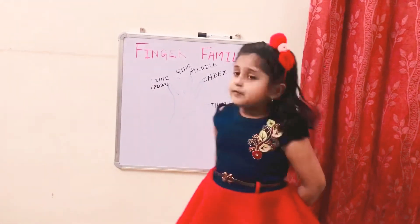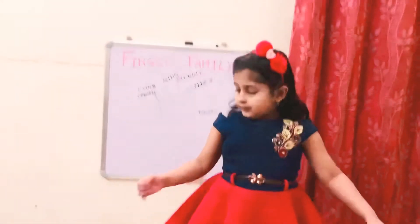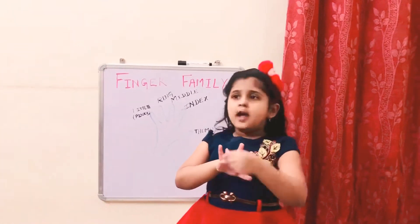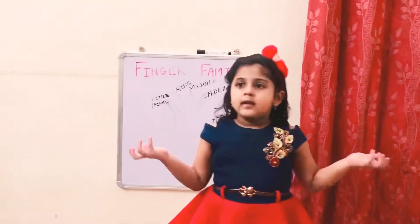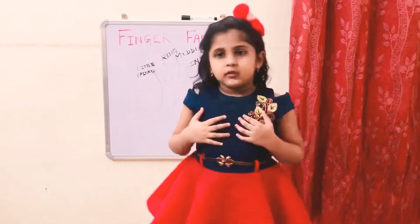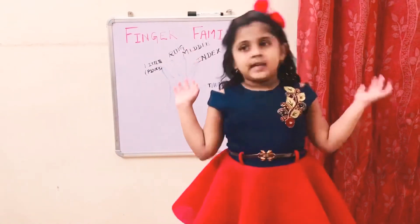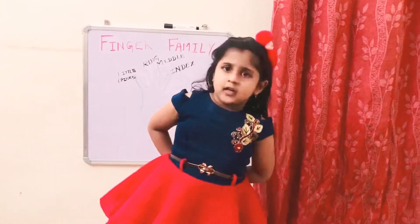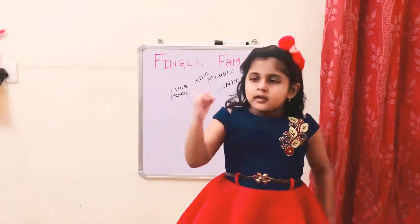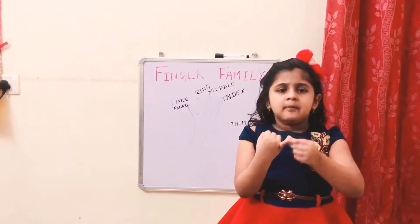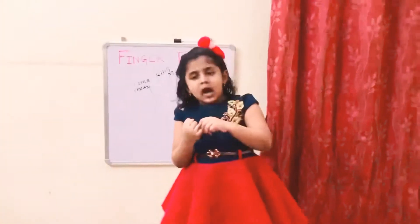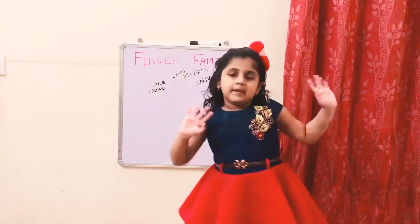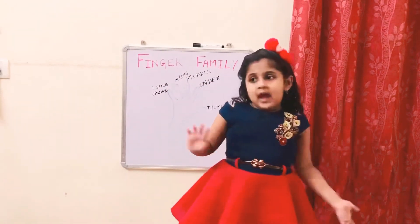Where is ring finger? Where is ring finger? Here I am. Here I am. How are you today, son? I am fine, thank you. Happy day. Happy day. Where is little finger? Where is little finger? Here I am. Here I am. How are you today, son? I am fine, thank you. Happy day. Happy day.